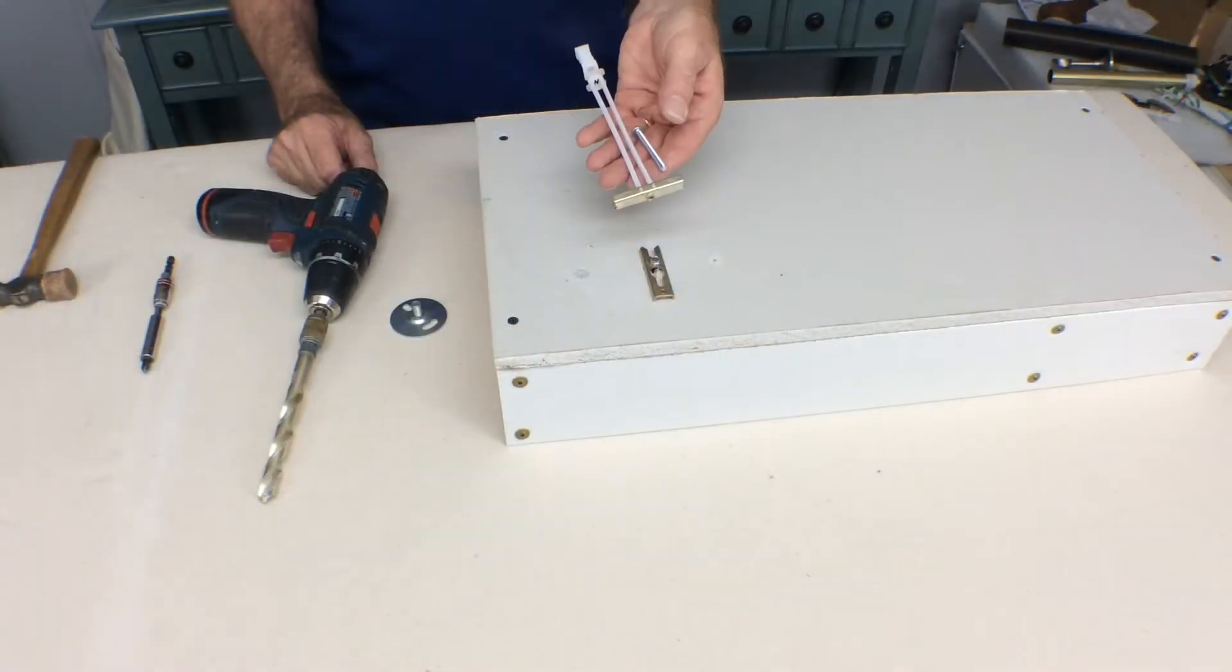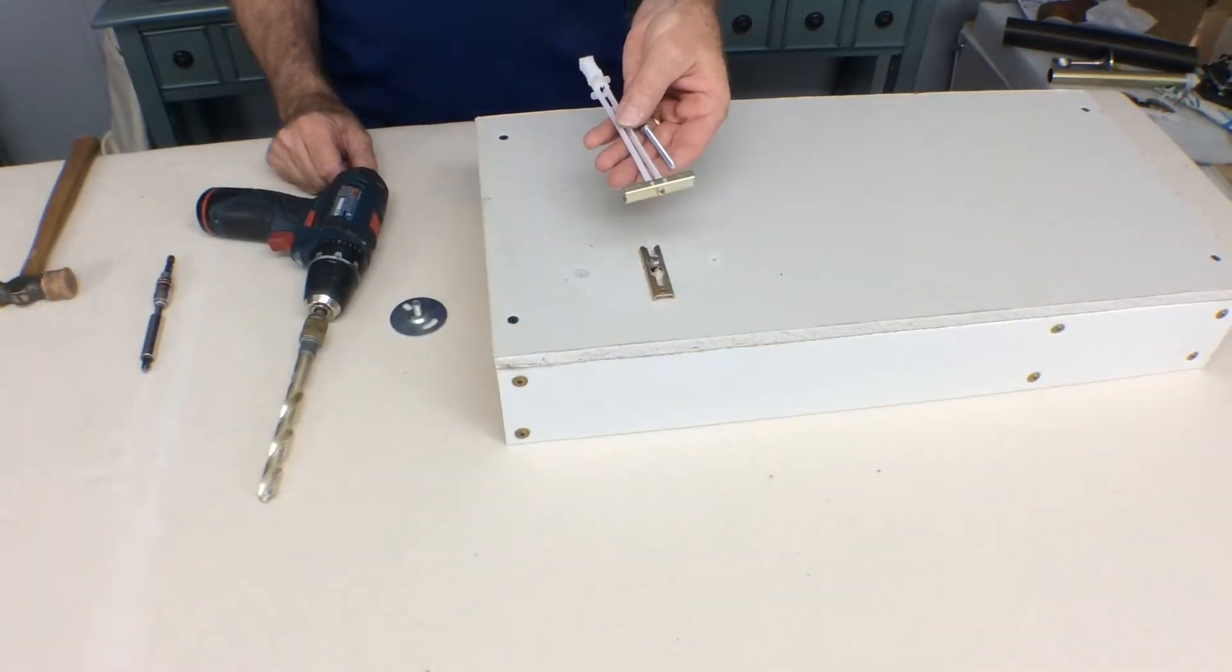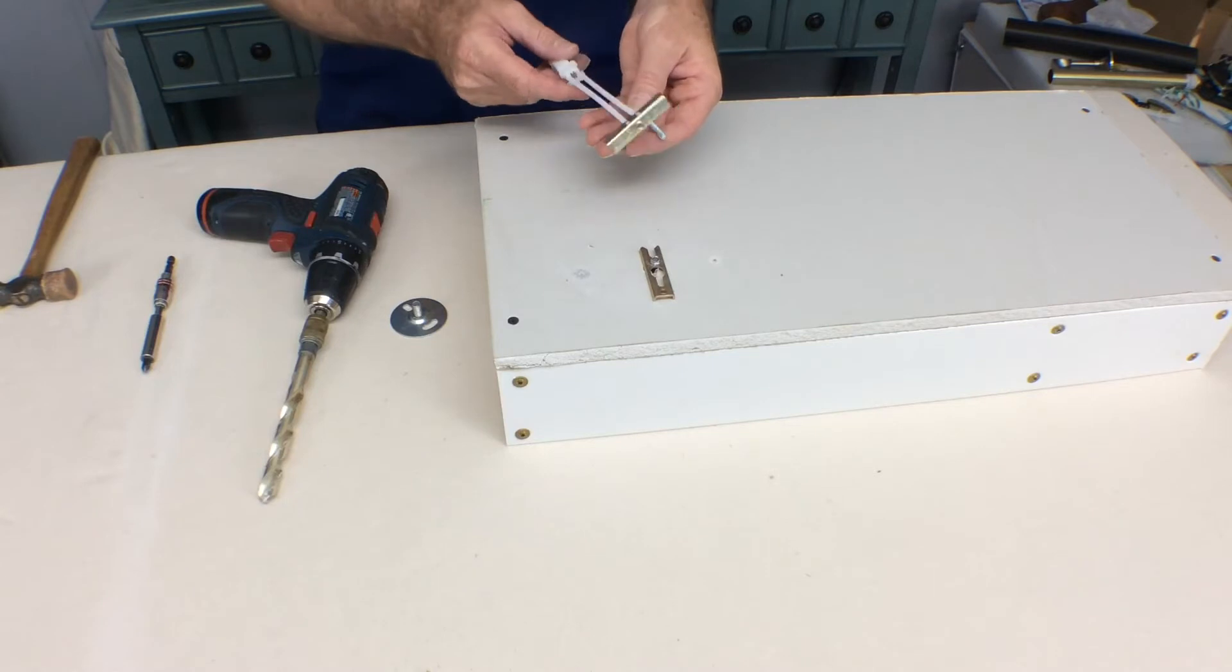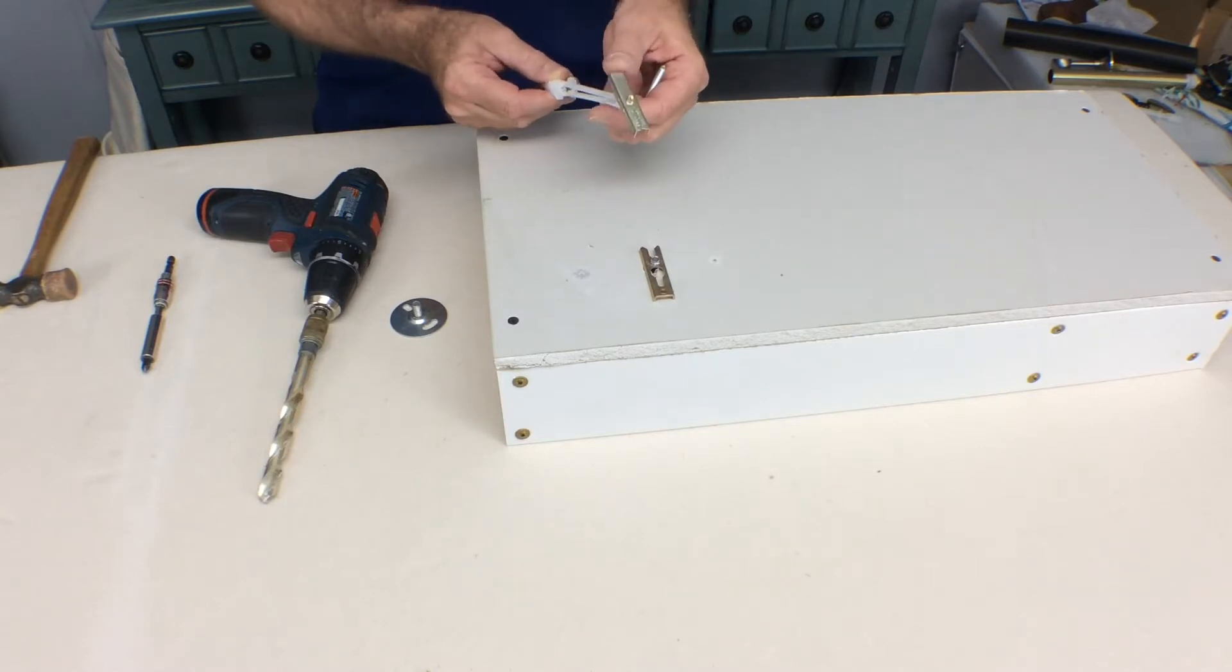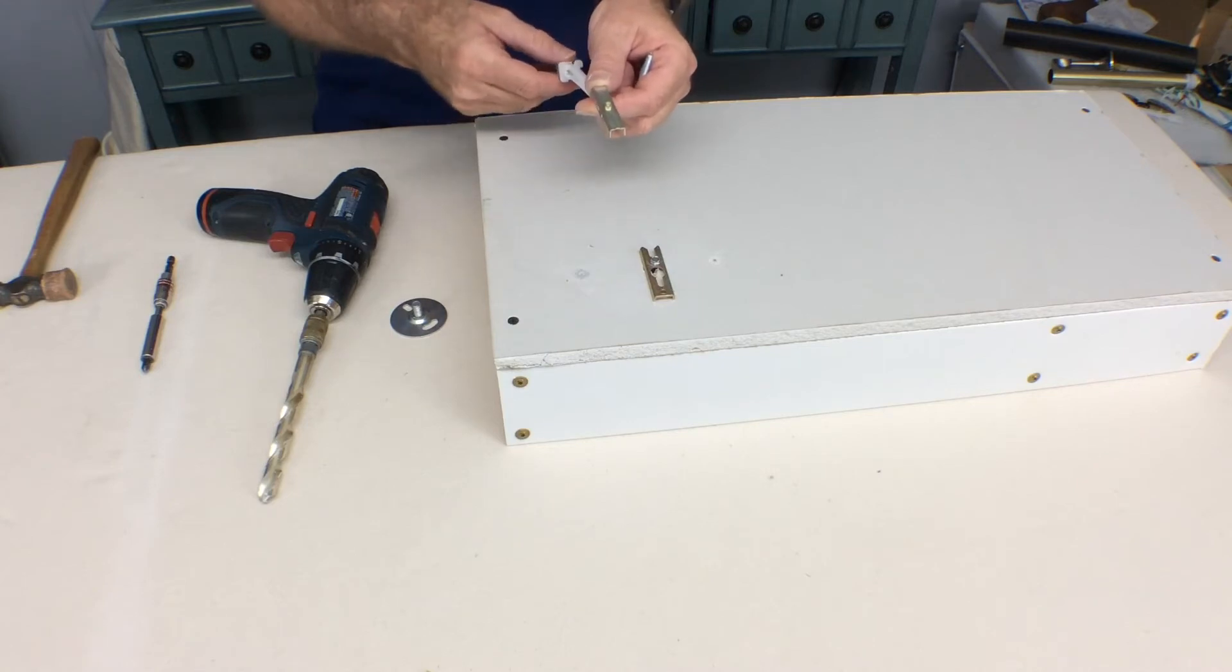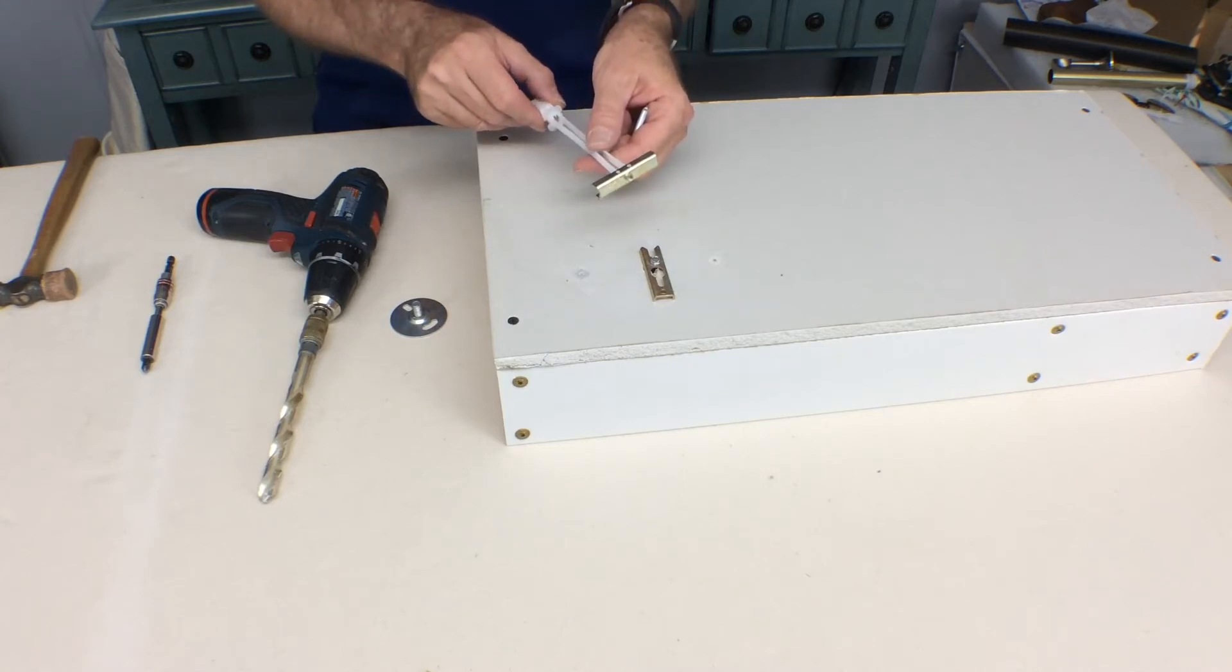This snap toggler is the heavy-dutyest of all. This one here will hold approximately 238 pounds in half-inch sheetrock. So this one requires a solid half-inch clean hole in order to accommodate this metal channel, which is going to be on the back side of the wall.